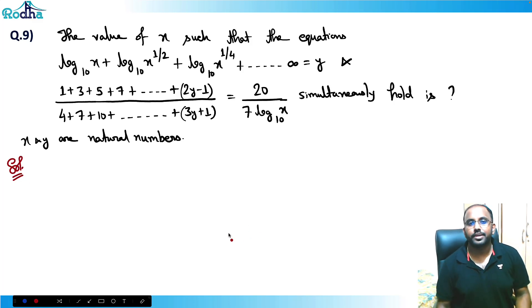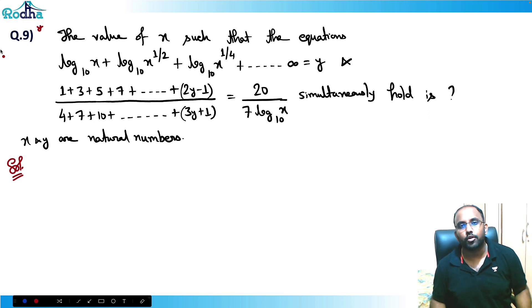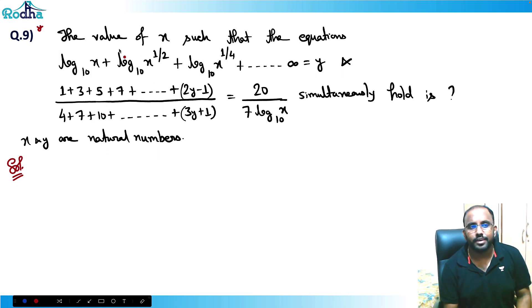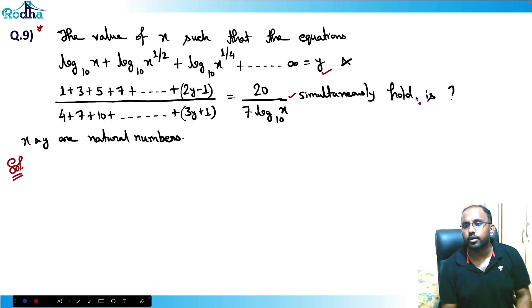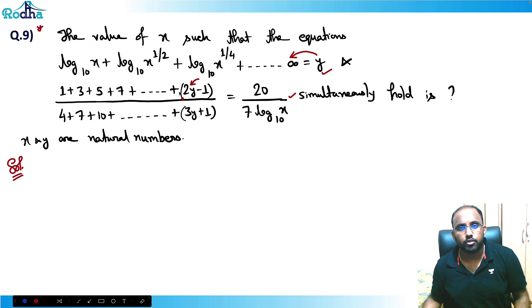Hi guys, let's solve this question. It's a very good question, a bit lengthy, but it involves a lot of concepts. Once you revise this question in the future, you can revise multiple concepts through one question. This question says: find the value of x such that these two equations simultaneously hold. From the first equation, I'll find the value of y and then plug it into the second equation.